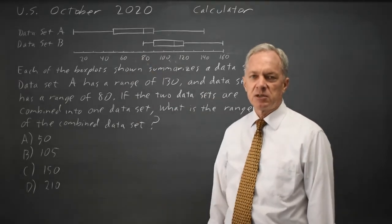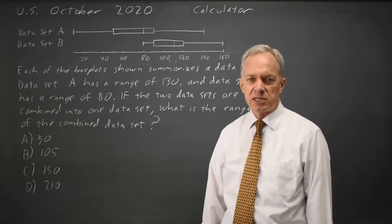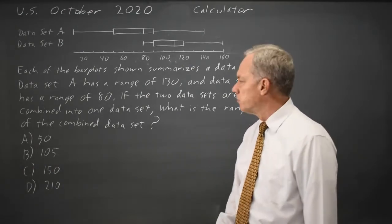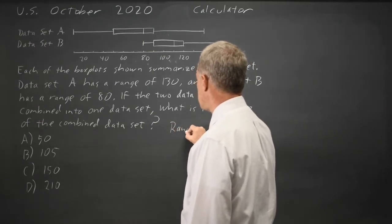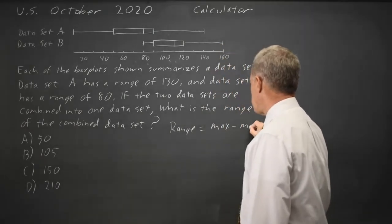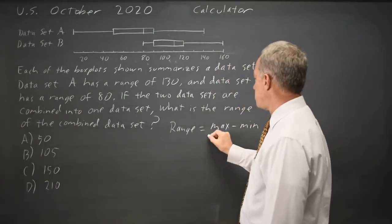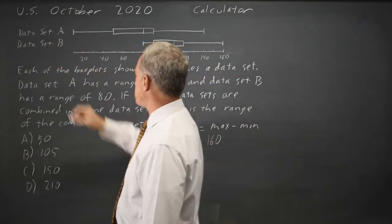160 minus 80 equals 80. And their question is: if you combine the two data sets, what is the range of the combined data set? The range is maximum minus minimum. The maximum is 160 between the combined data sets and the minimum of the combined data set would be 10.